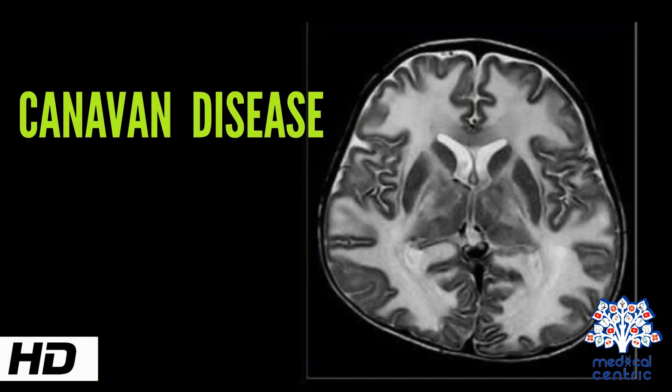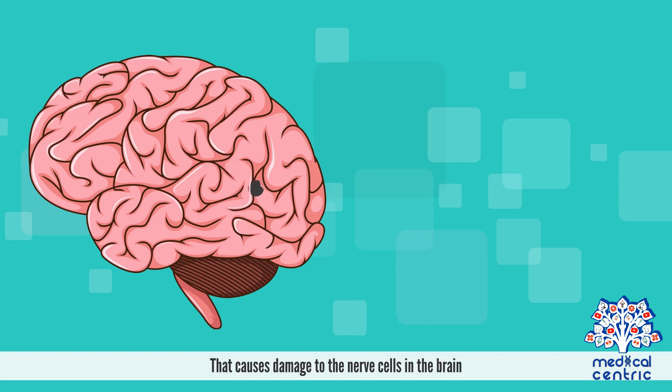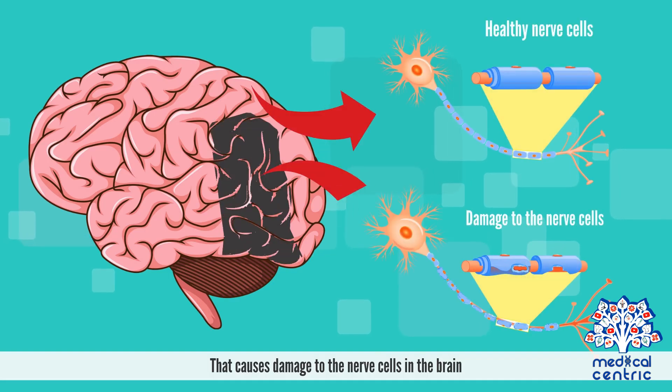Today's topic is Canavan disease. Canavan disease is a rare, progressive, inherited neurological disorder that causes damage to the nerve cells in the brain.